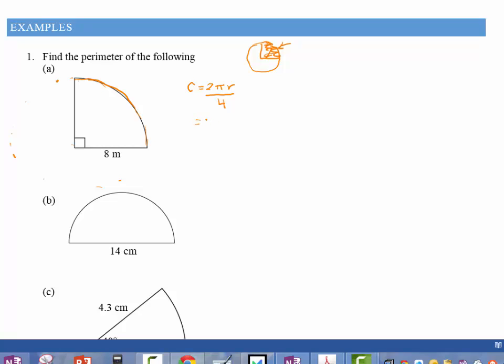So now I'm going to put some numbers in. So I've got 2 times π times my radius of 8. And I'm going to divide that whole thing by 4. And if I work that out, I think on my calculator I get 12.56637 and so on.